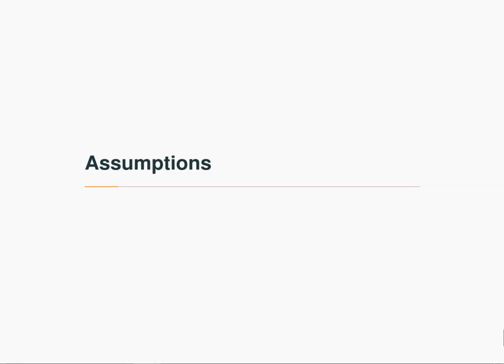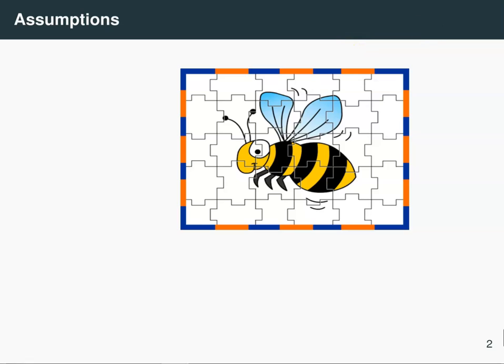So what are the three assumptions and how are they different? Let's say that we've got this jigsaw puzzle of a bee and we're interested in the different colors on each piece. For example, if we look at this piece we see mostly white pixels, whereas if we look at this piece we see some white pixels but also some black and some yellow pixels, and so on.